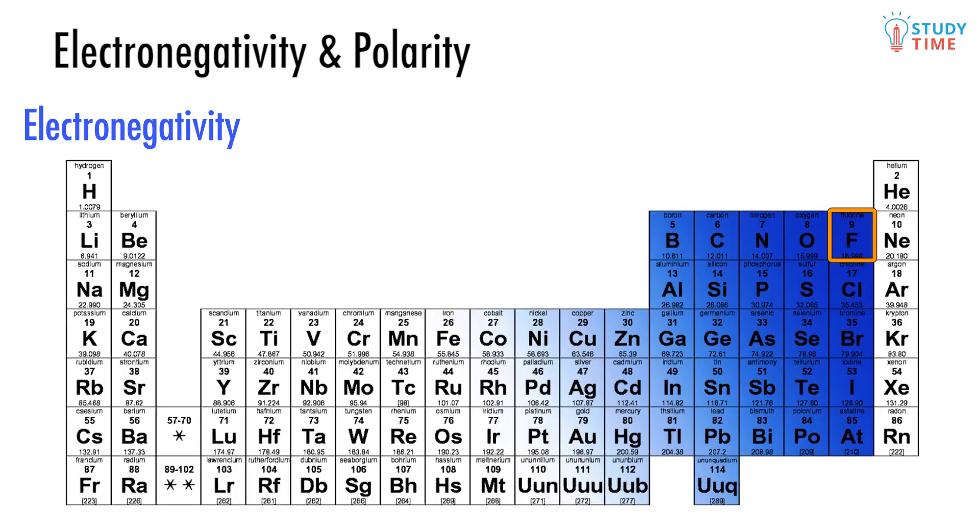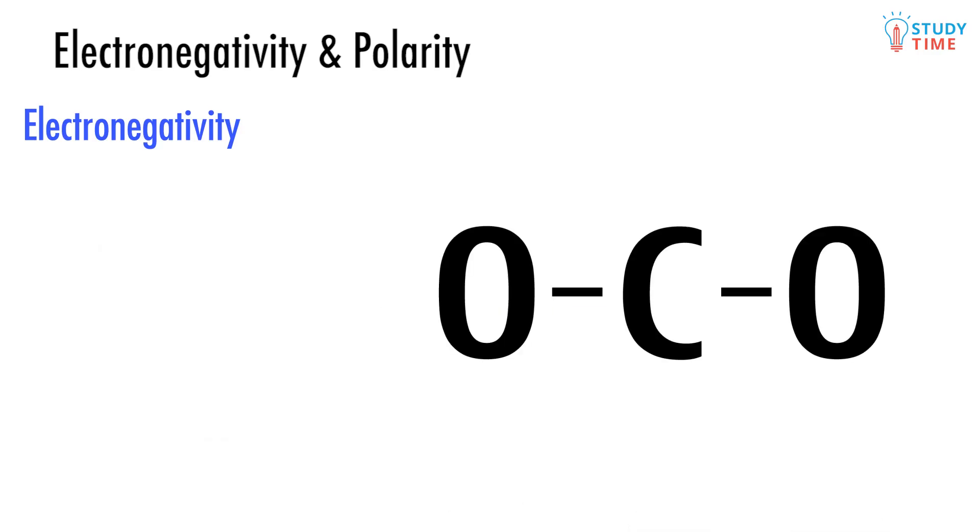We can use the table above to work out that a molecule of carbon dioxide is going to have a linear shape like this. Now, look at that special periodic table again.